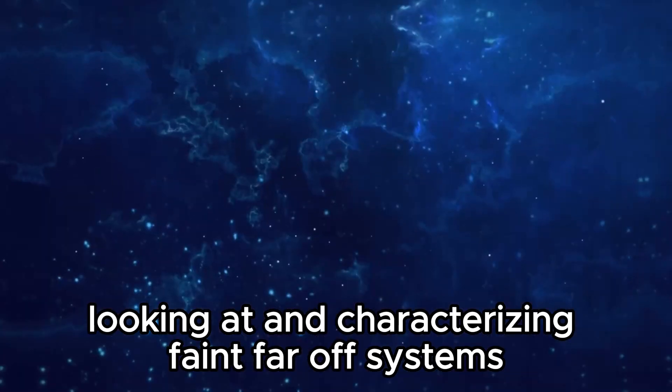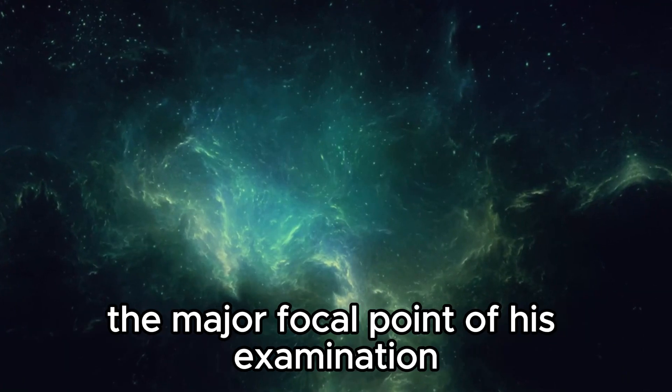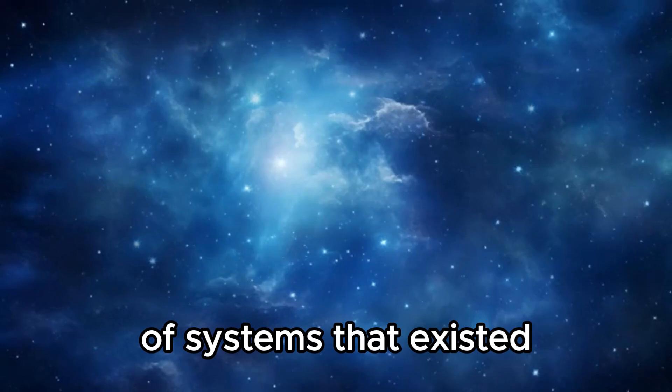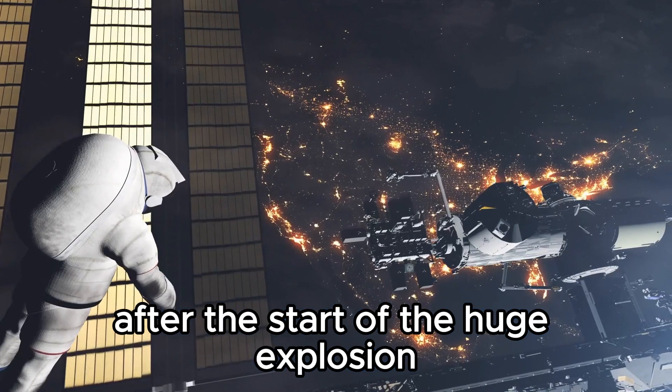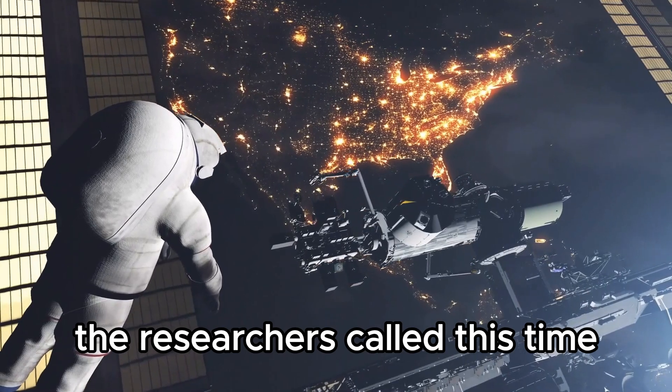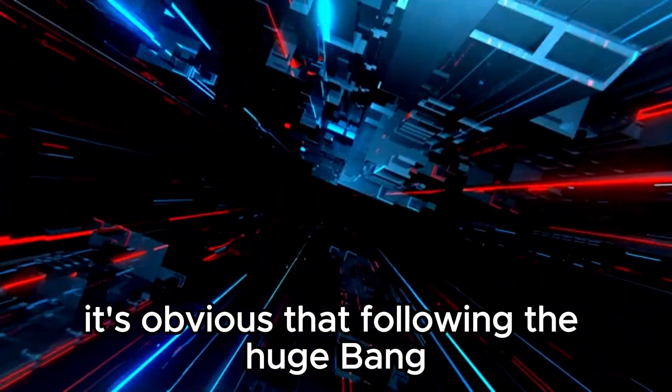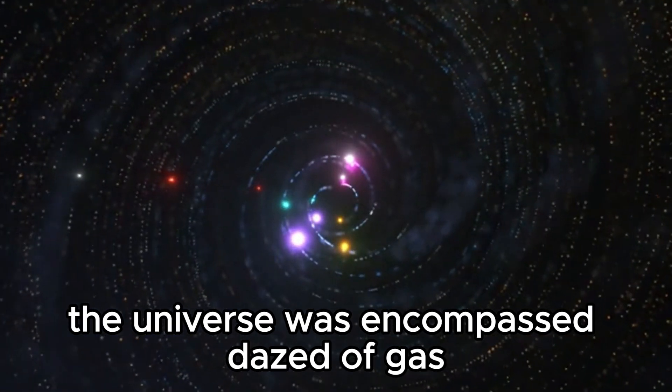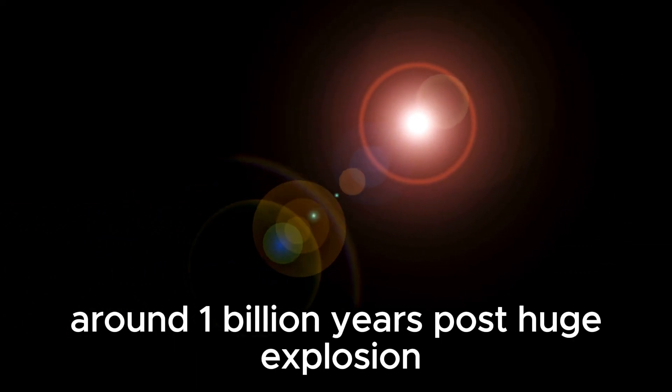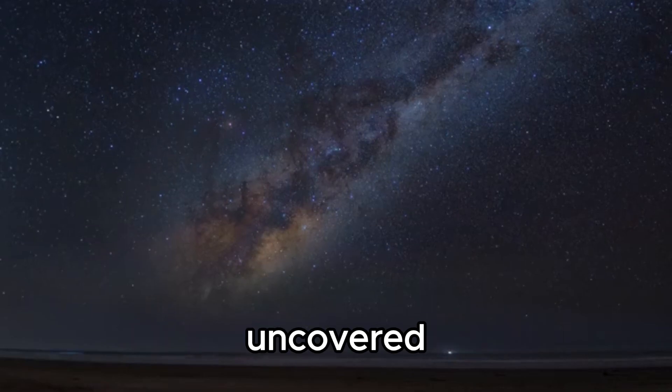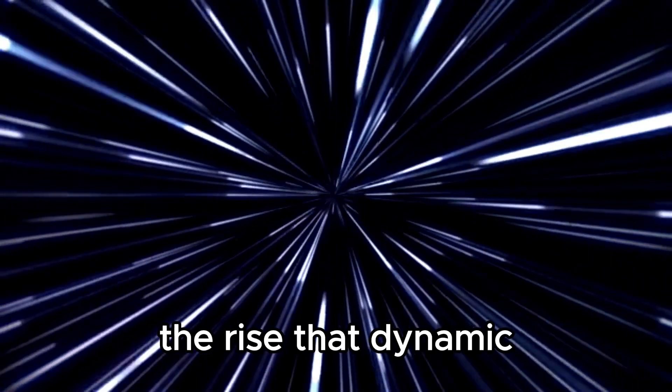Researchers spent significant stretches of time accomplishing fastidious work that involved unwinding, looking at, and characterizing faint, far-off systems. One of the vital participants in this exertion was Ryan, an understudy from the University of Texas Austin. The major focal point of his examination was systems that existed toward the start of the universe, around 500 to 800 million years after the start of the huge explosion. The researchers called this time the age of reionization. From the examination of Ryan and numerous different researchers, it's obvious that following the huge bang, the universe was encompassed by a haze of gas, making it hazy to vigorous light for such countless years.